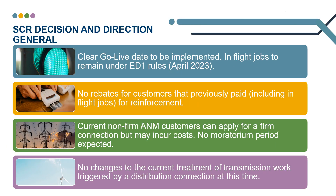Points to make clear: there will be a clear go live date to be implemented, which is April 2023. In-flight jobs will remain under ED1 rules. There will be no rebates for customers that have previously paid, including in-flight jobs, for reinforcement. Current non-firm A&M customers can apply for a firm connection but may incur costs. No moratorium period is expected. There are no changes to the current treatment of transmission work triggered by a distribution connection at this time. If there is a transmission constraint that may be five or six years before it is lifted, you can still request a flexible connection; however, there will be no guaranteed curtailment limit and/or end date because it is subject to a transmission constraint.